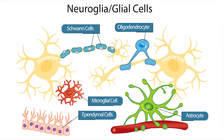Ependymal cells are found within the ventricles of the brain and are responsible for the production of cerebrospinal fluid, or CSF. Finally, microglia are the resident macrophages in the central nervous system and they have an immune role.